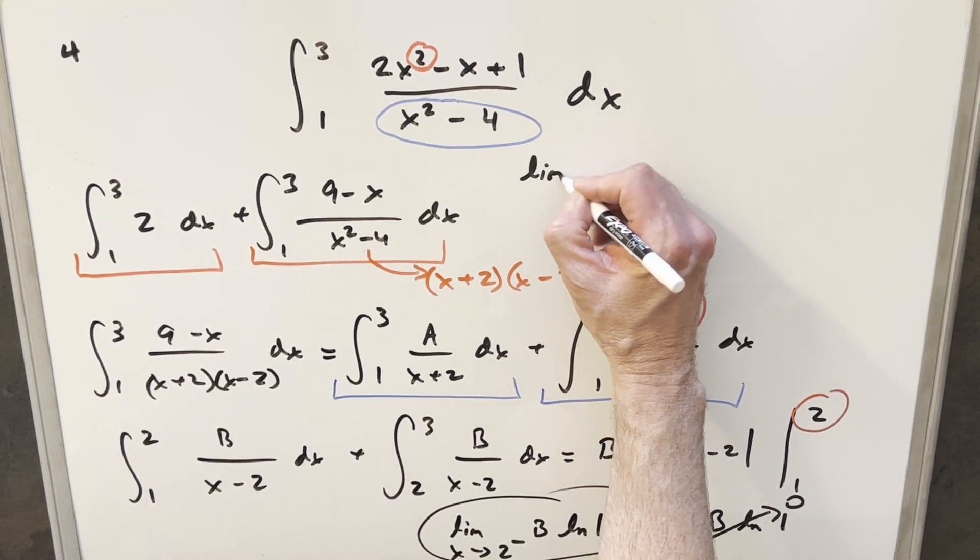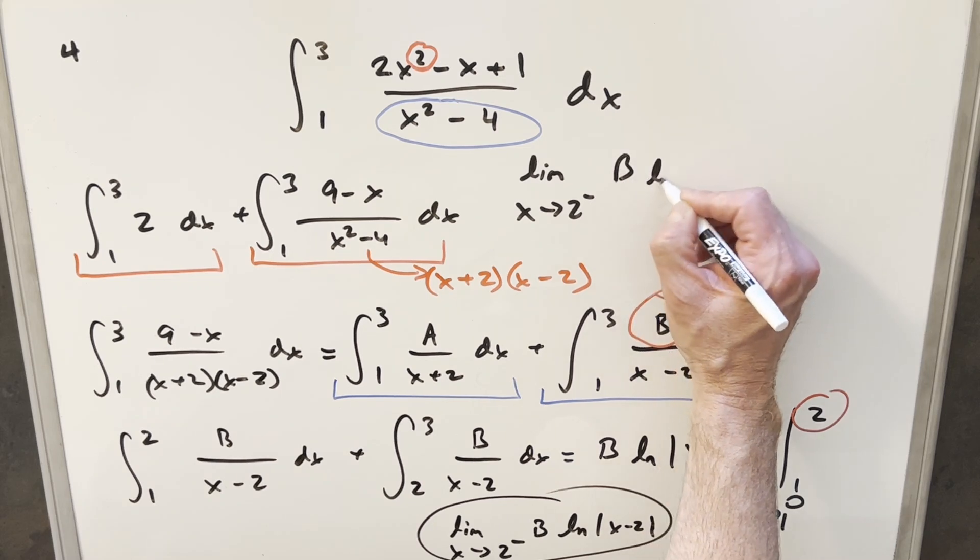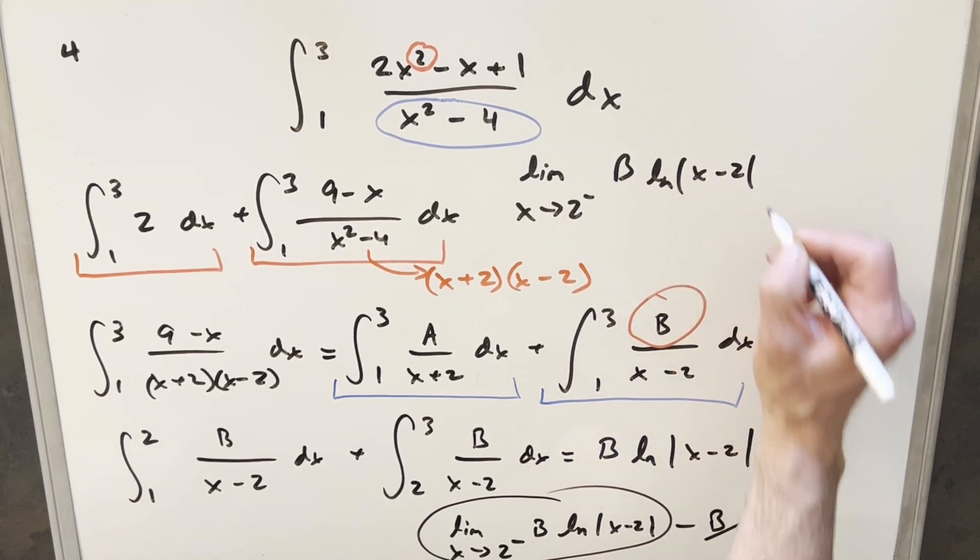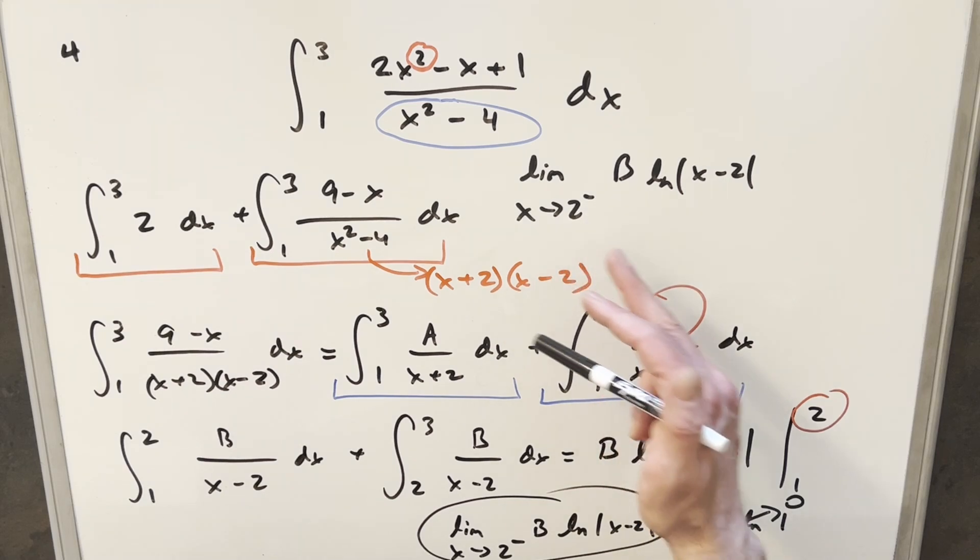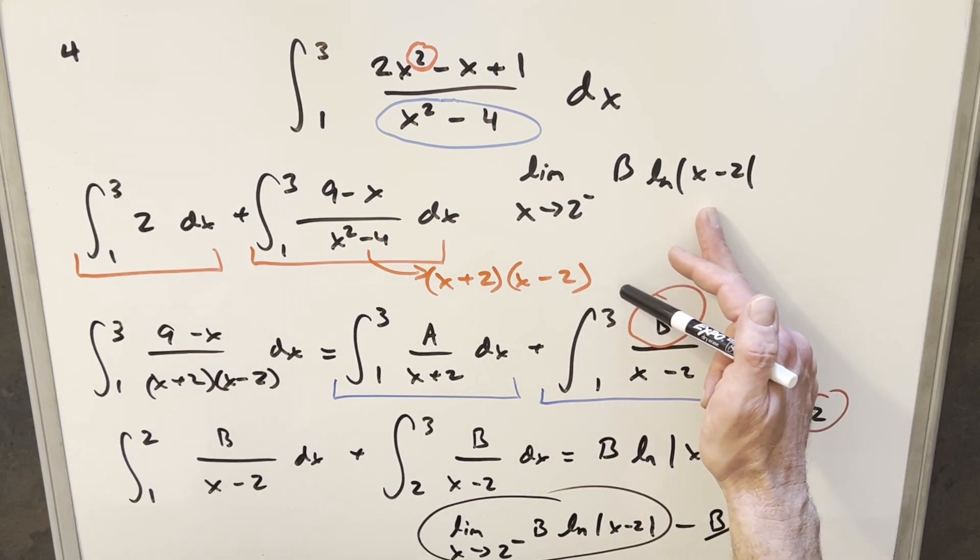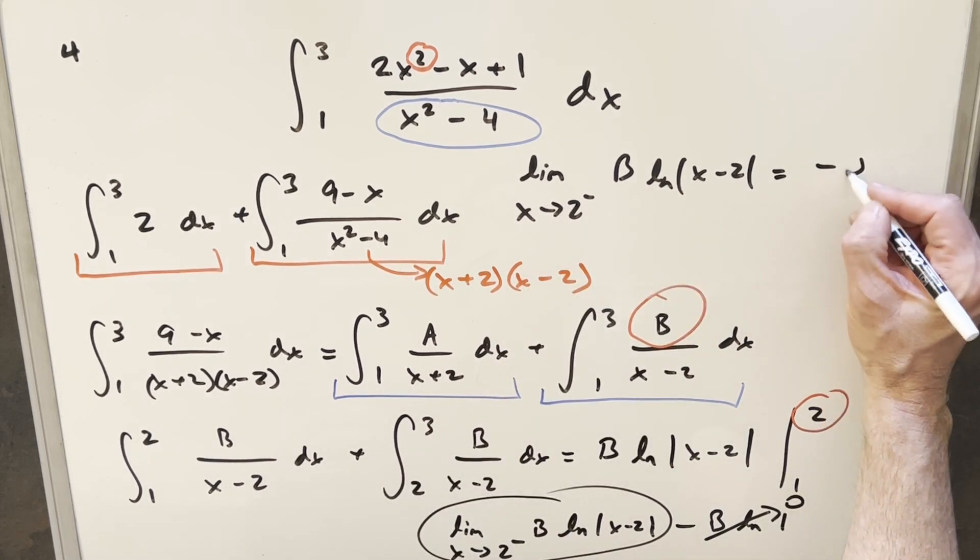Okay, so let's just come over here and look at this limit. So we have the limit as x approaching two minus of B ln x minus two. But now because of the absolute value sign, it doesn't really matter what side we're approaching two. Either way, this is going to be like zero plus. So the natural log approaching zero, this is actually going to minus infinity.